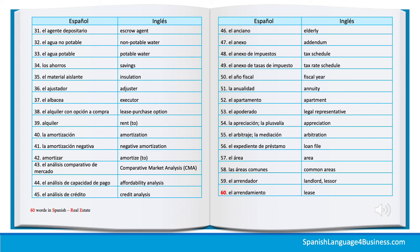50. El año fiscal — Fiscal year. 51. La anualidad — Annuity. 52. El apartamento — Apartment. 53. El apoderado — Legal representative. 54. La apreciación, la plusvalía — Appreciation. 55. El arbitraje, la mediación — Arbitration.